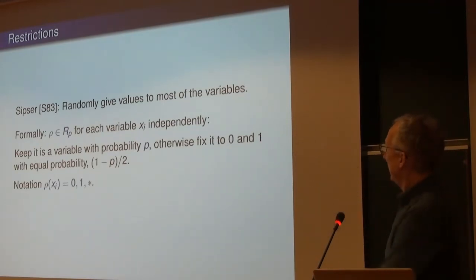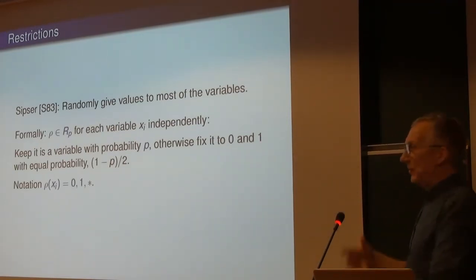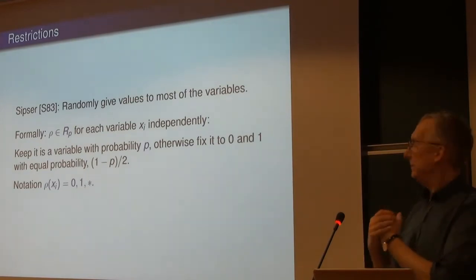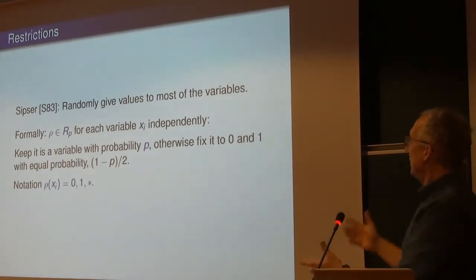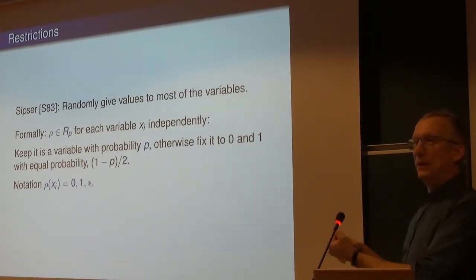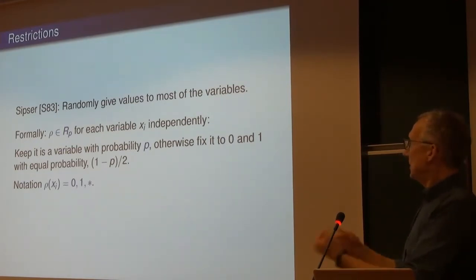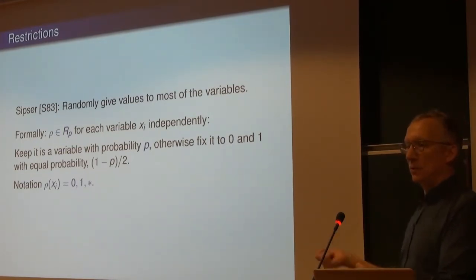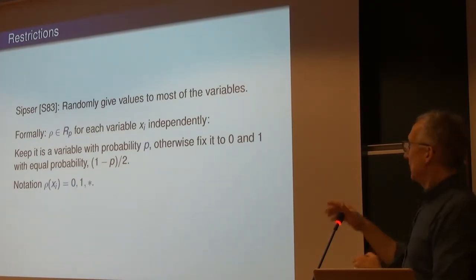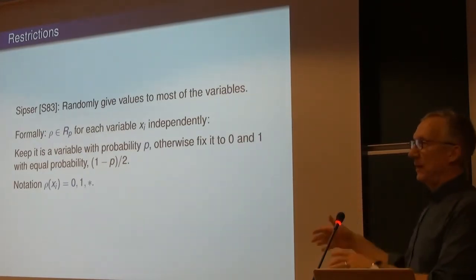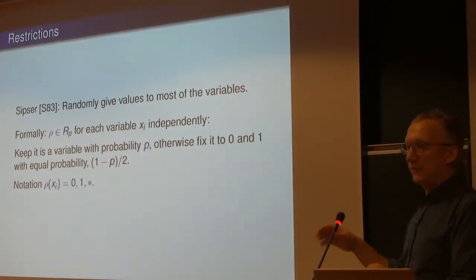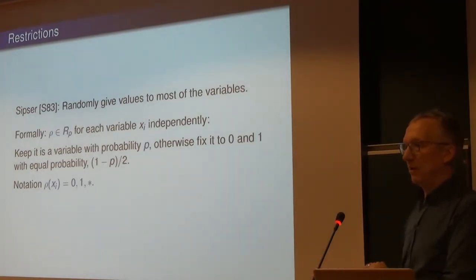The most basic restriction is called R_p. For each variable, it keeps it as a variable with probability p, and otherwise uniformly randomly assigns it 0 or 1 with equal probability. Think of p as a very small number — either a very small constant or a negative power of log N.